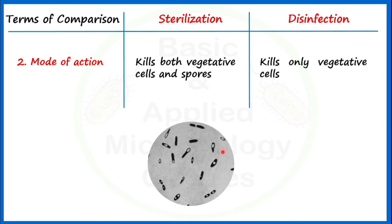Spores of bacteria are extremely resistant and it is very difficult to eradicate them using disinfection. That's why we say disinfection is non-sporicidal because spores remain, and sterilization is sporicidal because it works for both vegetative cells and spores.